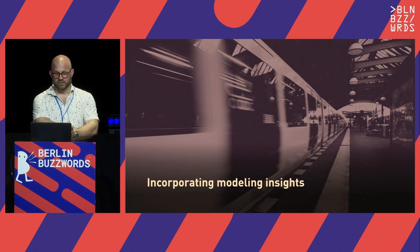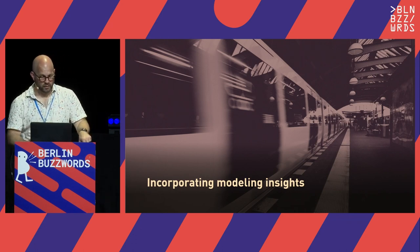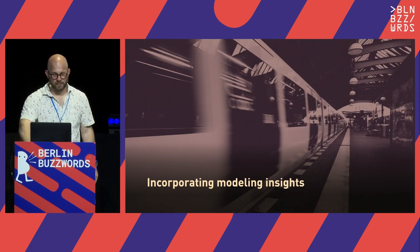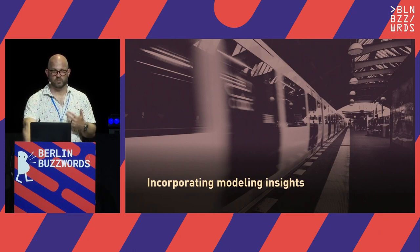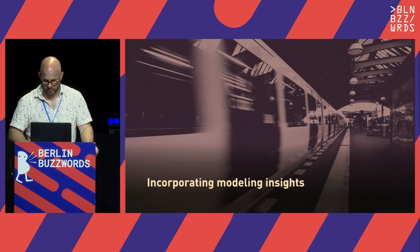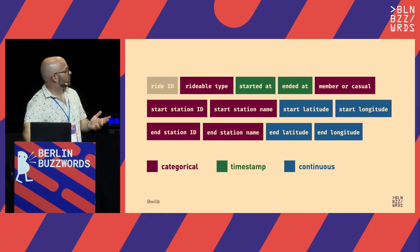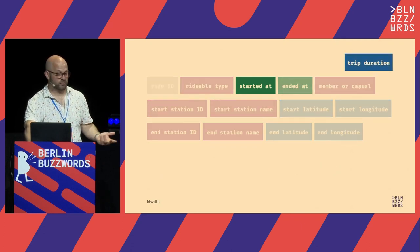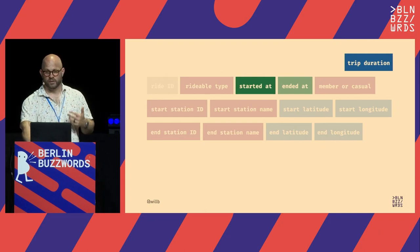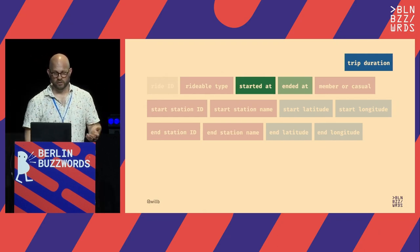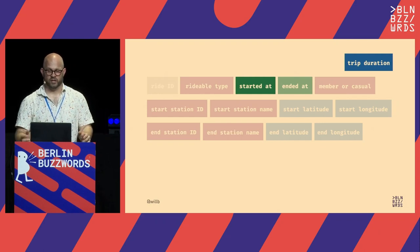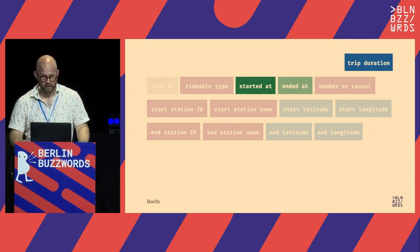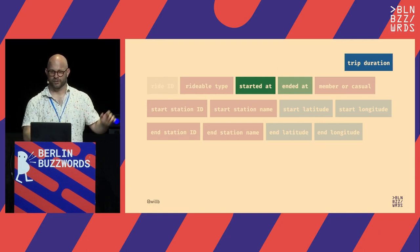The next topic is how we can take things we know about the real world that generated this data and use it to make our synthetic data more realistic. If you're used to working in machine learning, some of these techniques will be familiar as feature engineering techniques, but you may not have thought about them in this context. I want to focus on examples involving time. Modeling start and end independently doesn't make that much sense.